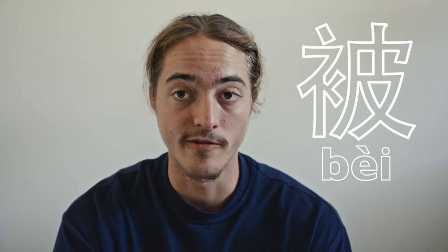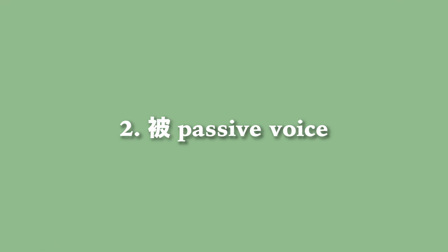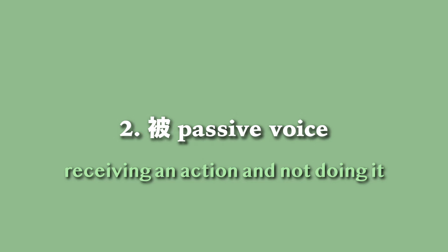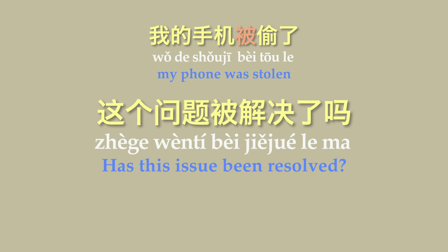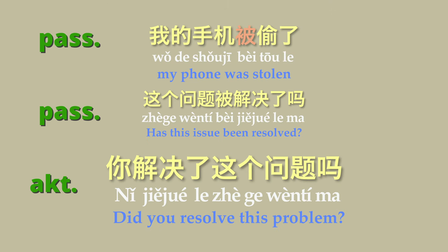Next, let's talk about the word 被, which indicates the passive voice. Just use 被 before a verb to express that a subject is receiving an action rather than performing it. This is often used in past tense. For example: 我的手机被偷了 — my phone was stolen. 这个问题被解决了吗? — Has this problem been solved? Compare that to the active: 你解决了这个问题吗? — Did you solve that problem?